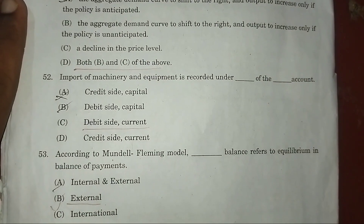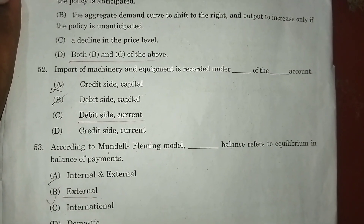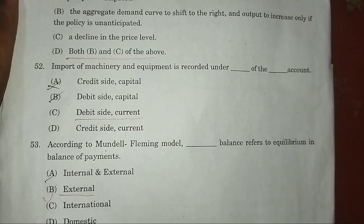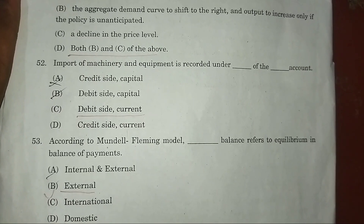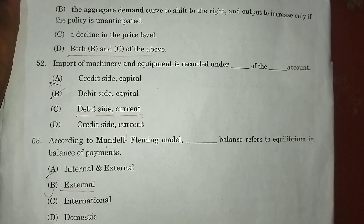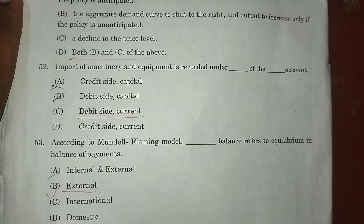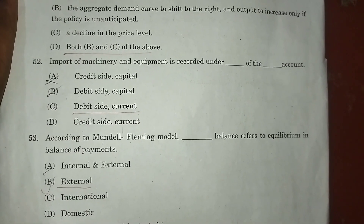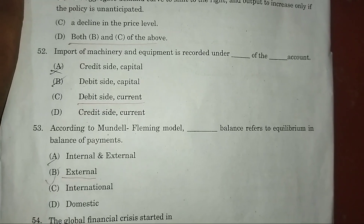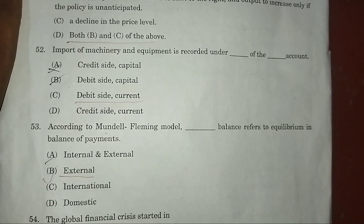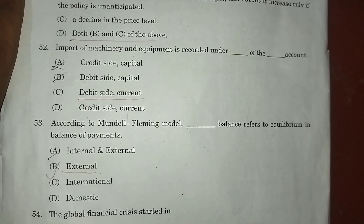Question 52: Import of machinery and equipment is recorded under — answer: C — debited to the current account.